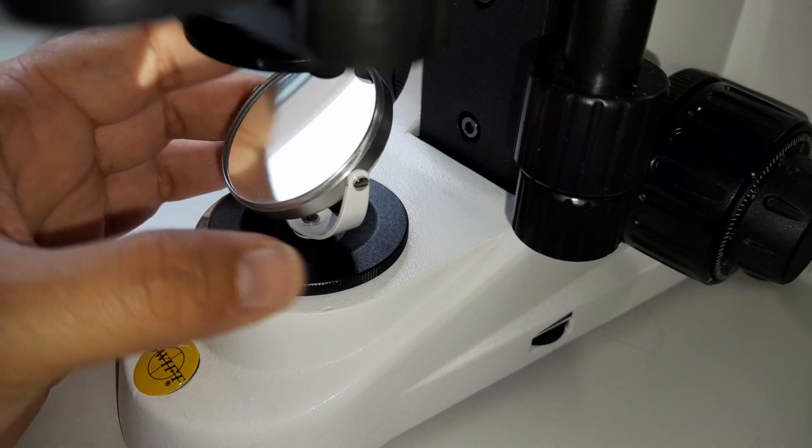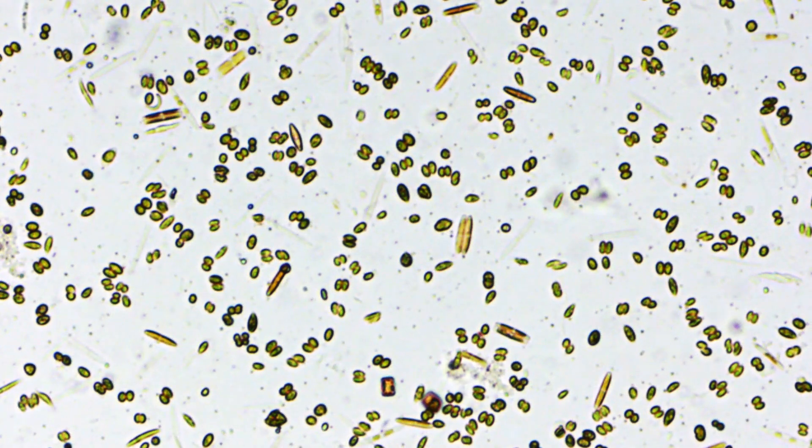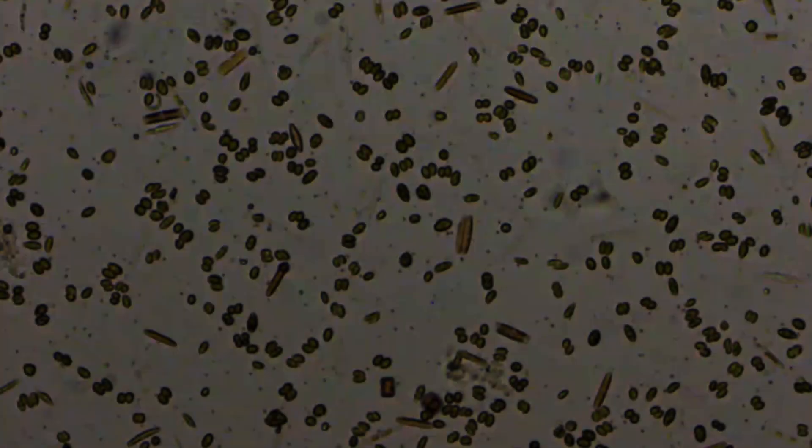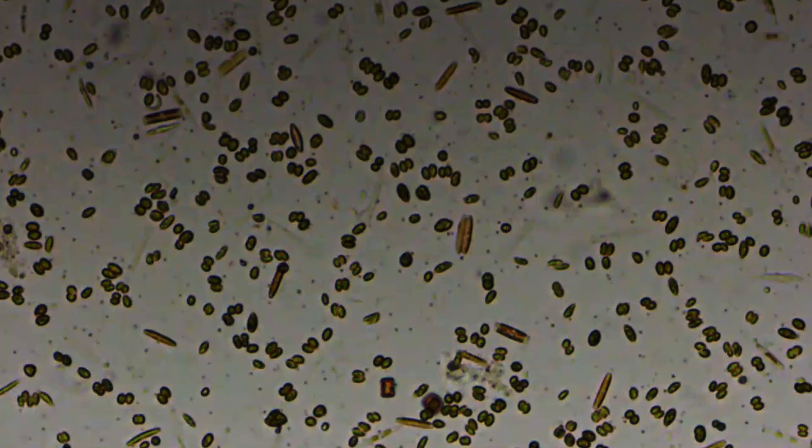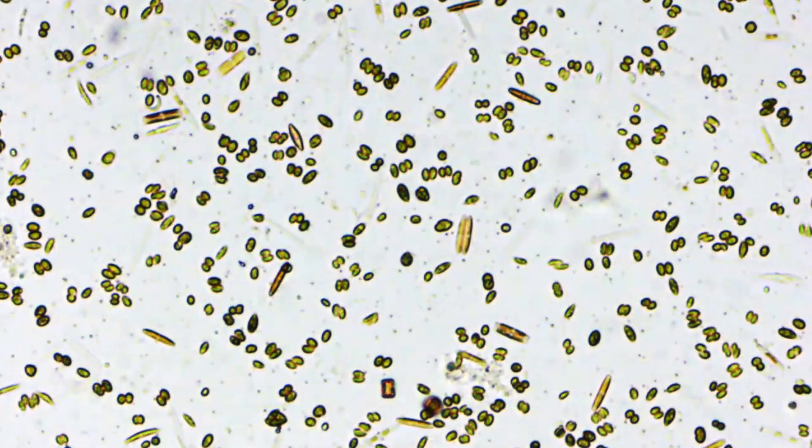Now I put also an algae specimen under the microscope to illustrate how twisting and turning the mirror, how this affects the light intensity. Here I'm using a flashlight as a light source.